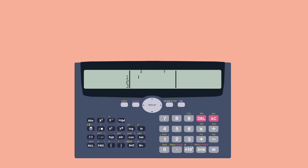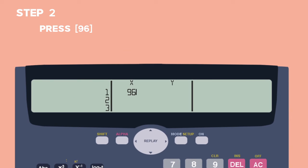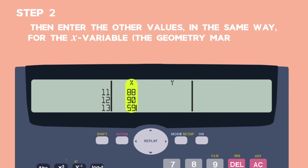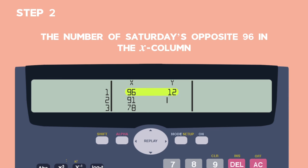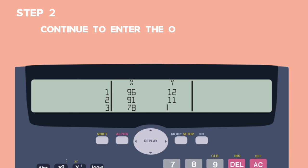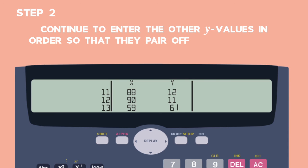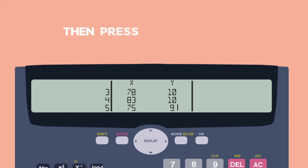Step 2. Enter the data. Press 96 and then the equals button to enter the first mark under X. Then enter the other values in the same way. For the X variable the geometry marks in the order in which they are given in the data set. Then move the cursor across and up and enter 12 under Y. The number of Saturdays opposite 96 in the X column. Continue to enter the other Y values in order so that they pair off correctly with the corresponding X values. Then press the AC button.